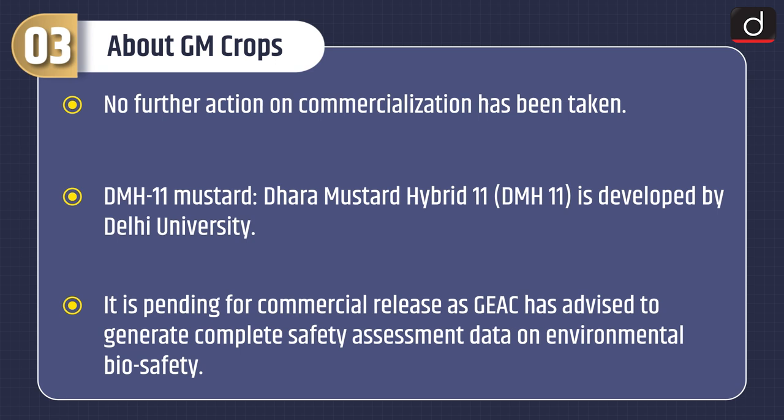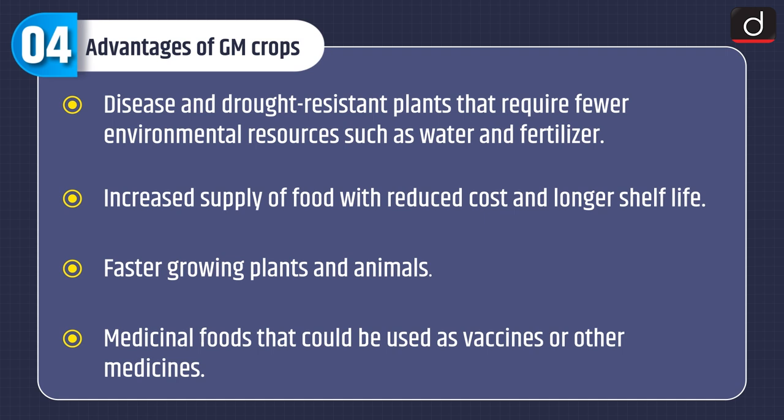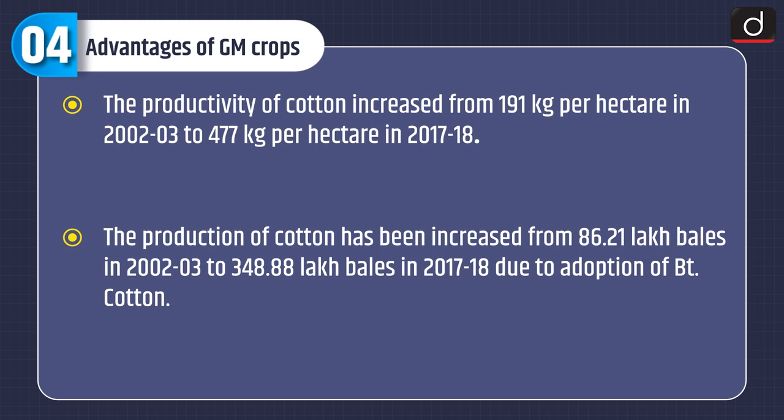Now moving on to advantages of GM crops. These include disease and drought-resistant plants that require fewer environmental resources such as water and fertilizer, increased supply of food with reduced cost and longer shelf life, and faster growing plants. The productivity of cotton increased from 191 kg per hectare in 2002 to 477 kg per hectare in 2017–18.